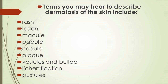Terms used to describe dermatosis of the skin include: rash — a wide variety of skin conditions that are red and raised; lesion — an area of skin that is abnormal; macule — a change in color or consistency of the skin; papule — a bump on the skin smaller than one centimeter in diameter; and nodule — a bump on the skin larger than one centimeter in diameter.